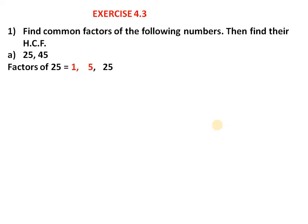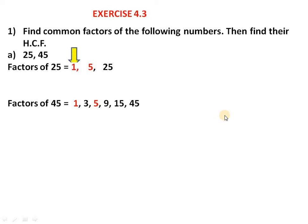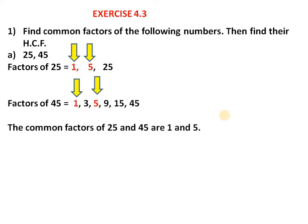Now what are the factors of 45? Factors of 45 are: 1, 3, 5, 9, 15, and 45. We have found the factors of both 25 and 45. Now we check for common factors — 1 is common in both, and 5 is common. So the common factors of 25 and 45 are 1 and 5.